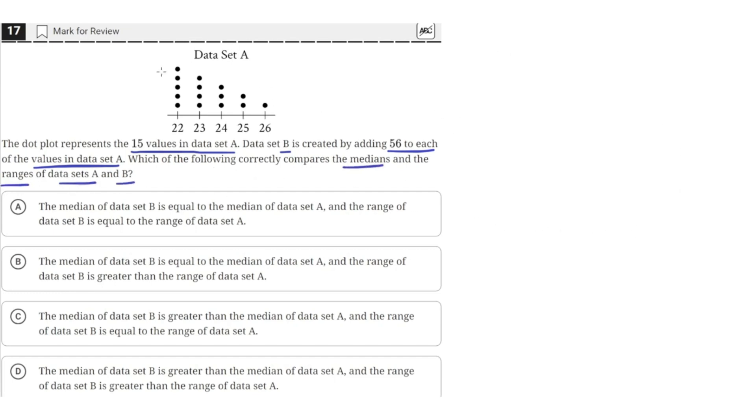So this is data set A. It goes from values 22 to 26. Data set B, however, will be data set A, but each point or value has 56 added to it. So this 22 becomes 78, and this 26 will just be 56 larger as well.